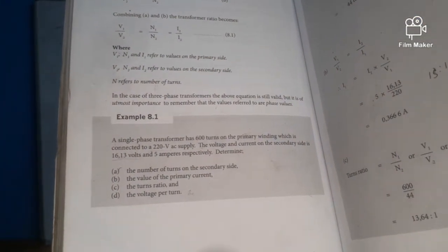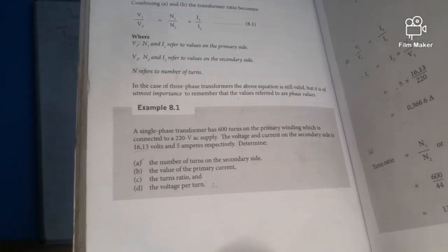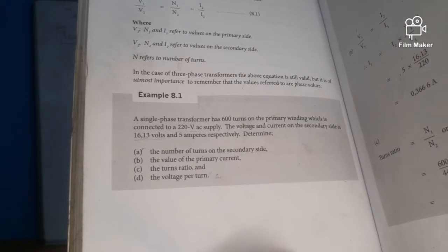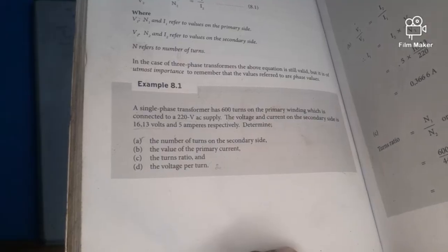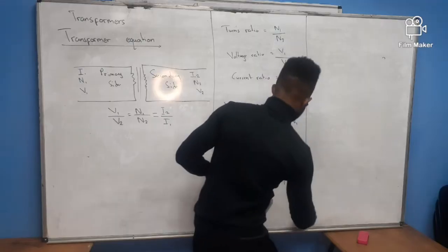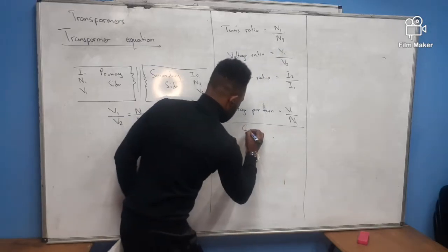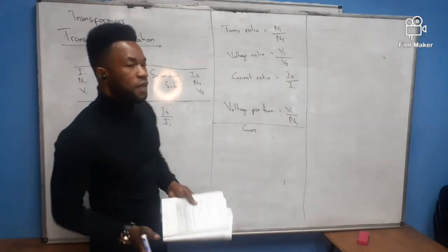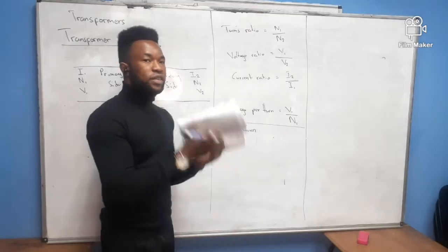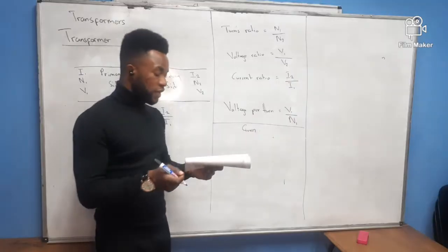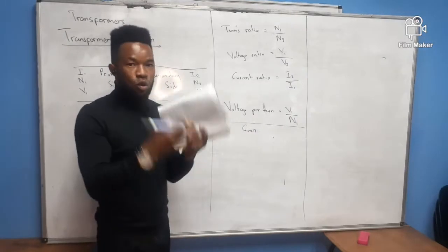Let's do an example from the textbook — Chapter 8, Example 8.1. It reads: a single-phase transformer has 600 turns on the primary winding, connected to a 220V AC supply. The voltage and current on the secondary side are 16.13 volts and 5 amps respectively. I always advise students to write the given data. This transformer is single-phase — note that a transformer can be single-phase or three-phase.